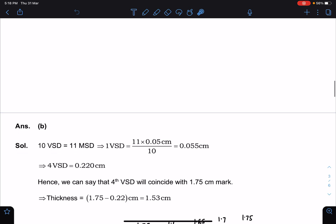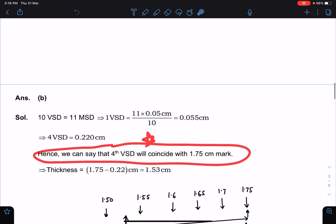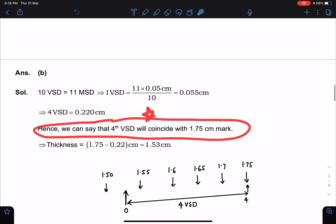So next, here we are writing that we can say fourth vernier scale is coinciding with the 1.75 mark. Now this you have to make the guesswork logically, because you can see here zero of vernier scale is lying between 1.50 and 1.55.